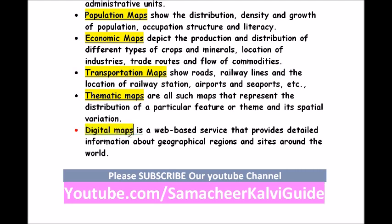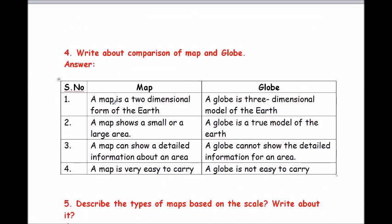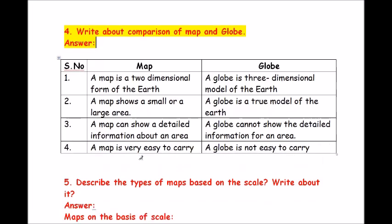Question 4: write about the comparison of map and globe. A map is a two-dimensional form of the earth while a globe is a three-dimensional model of the earth. A map shows small or large areas in detail; a globe is a true model of the earth but cannot show detailed information for a specific area. A map is very easy to carry whereas a globe is not easy to carry.